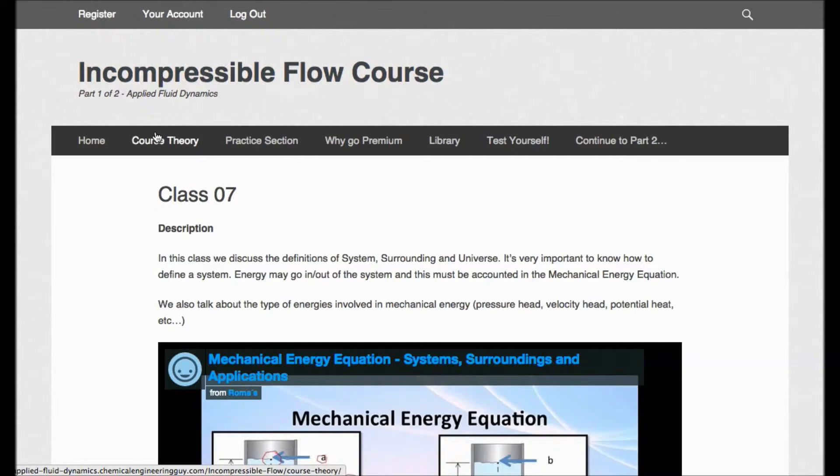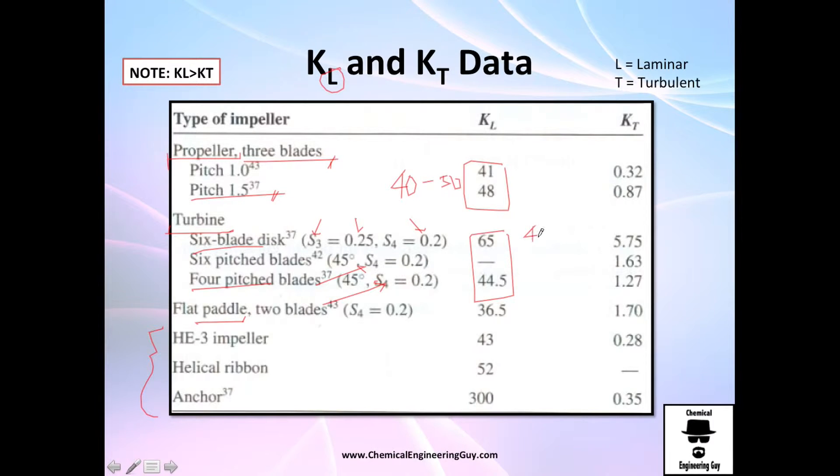Between 40 and 65 for a paddle of two blades, which is not that common. Normally you have more paddles, but for this case with two blades you have 36. As you can see, they're around 50, 40, 60. Only the anchor, which is for very high viscosity fluids, has a very huge amount of the constant KL, and it makes sense because the power requirements will be higher.